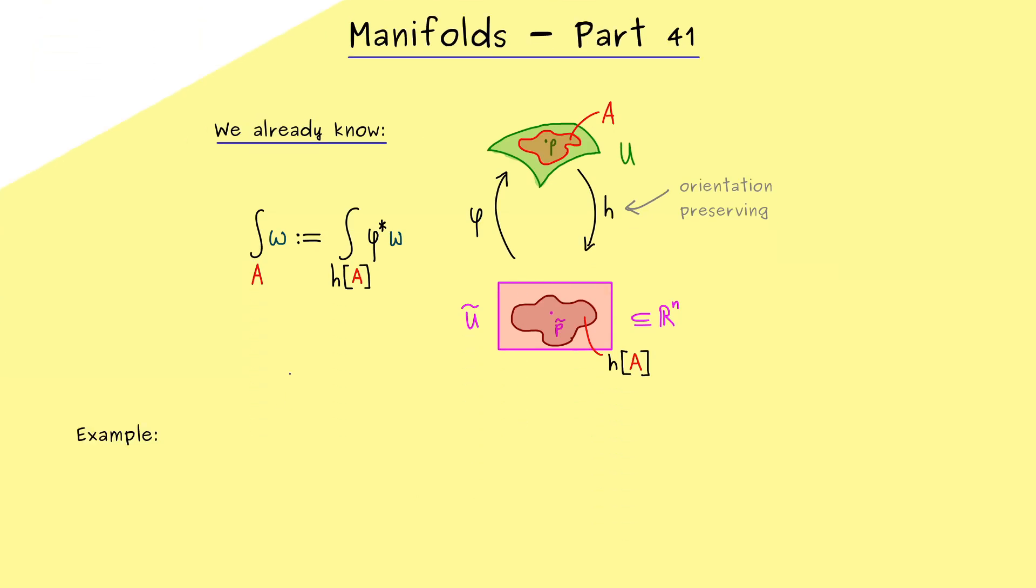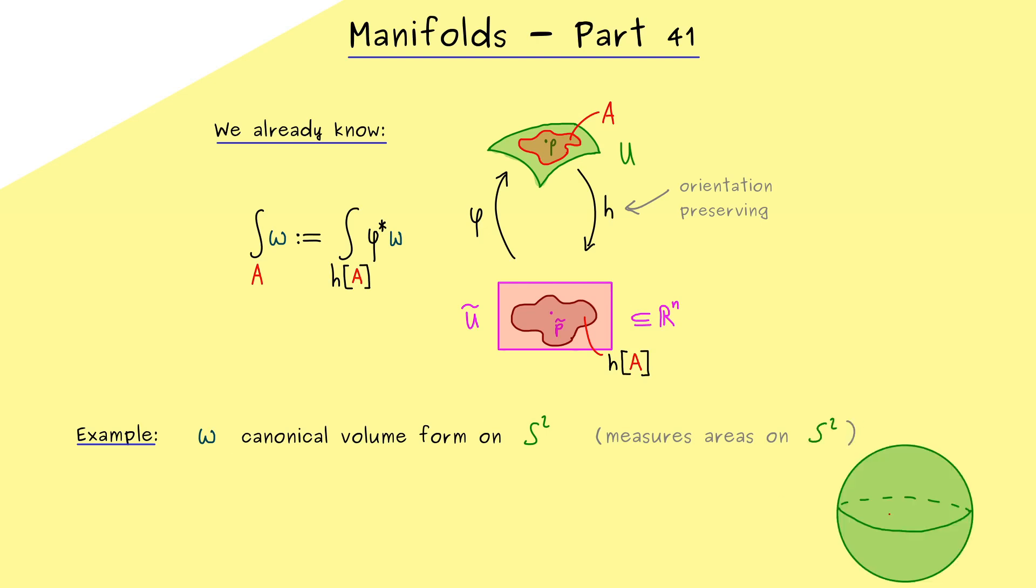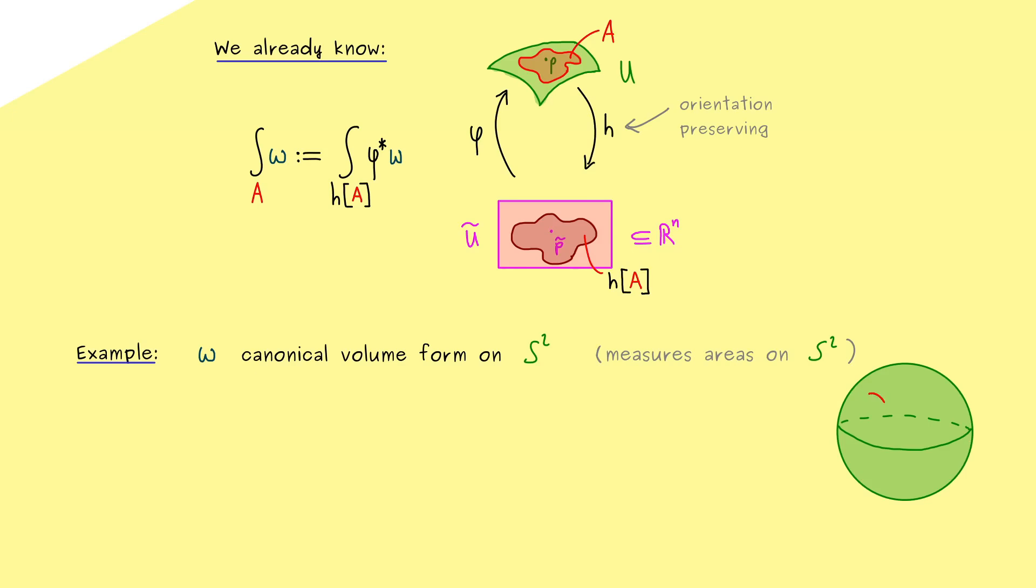Before doing the general case, I think it's very helpful to look first at an example. One we already know very well is the sphere S^2. Since this one is an orientable Riemannian manifold, we know that we have a canonical volume form on it. Since we have dimension 2, we actually measure areas with this volume form. So for example, the question would be, can we measure the area of such a subset on S^2. In order to do that, we need a parameterization.